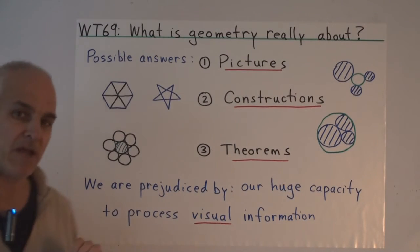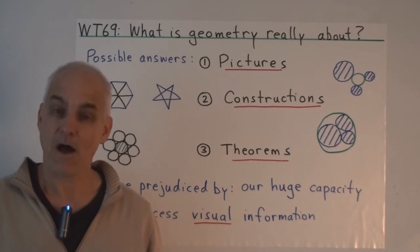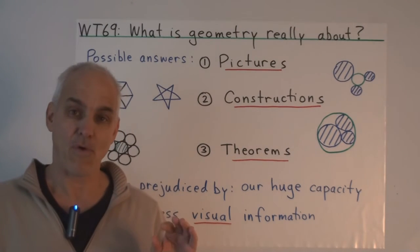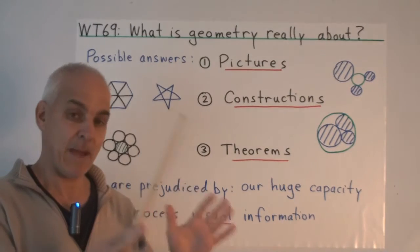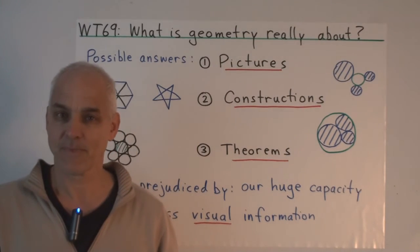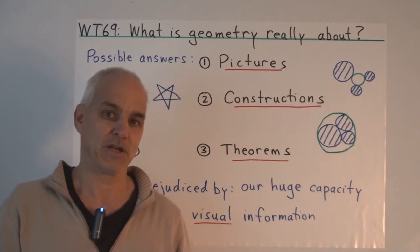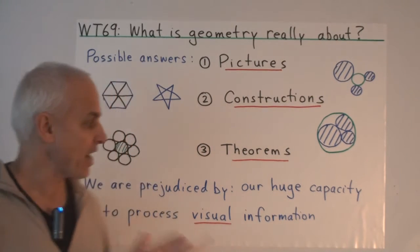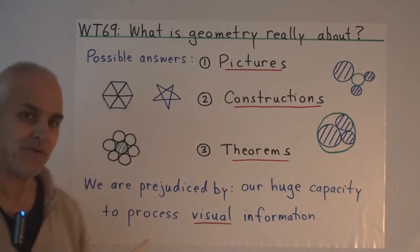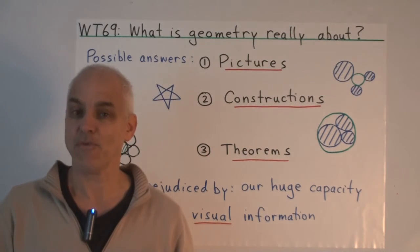It's probably important for me to mention that our understanding of geometry is prejudiced by our fabulous ability to process visual information. Our brains have huge capacity for comprehending three-dimensional imagery and processing it and capturing a lot of information in a visual image. So we are kind of in tune with geometry as a visual subject. But it's not necessarily so intrinsically. And the answer that I want to propose to this question is not on this list. It's something else entirely, and it's something that's much less visual than you might have thought.